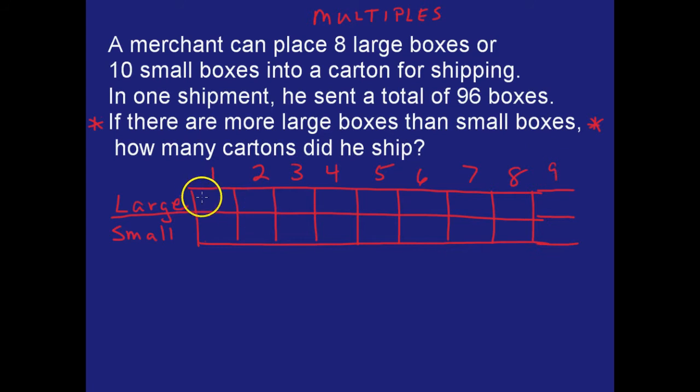Okay, and so multiples of large boxes would be 8. So one carton will have 8 boxes, two cartons will have 16, three cartons 24, four cartons 32, and so on—48, 56, 64, and 72. And then small boxes are multiples of 10.